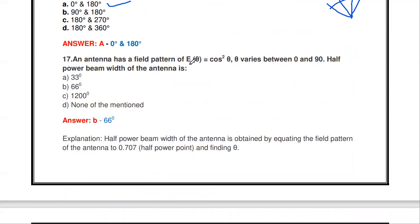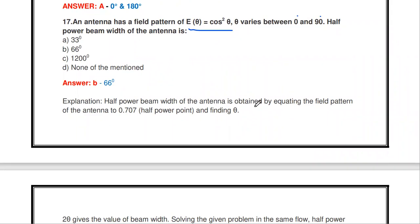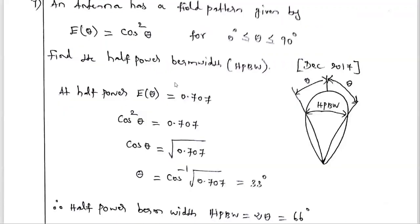An antenna has a field pattern E(θ) = cos²θ, where θ varies from 0° to 90°. What is the half power beam width? Options: 33°, 66°, 120°, none. The answer is 66°. To solve this, equate the field pattern to 0.707 (which is 1/√2, the electric field value at the half power point). So cos²θ = 0.707, take the square root: cosθ = √0.707, giving θ = cos⁻¹(√0.707) = 33°. This is an important question asked in December 2017 and other years.